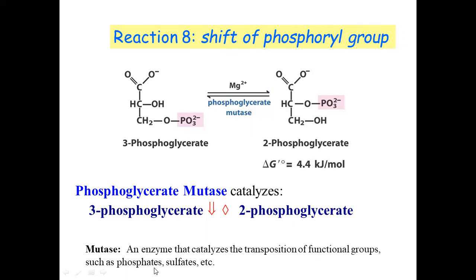Mutase is an enzyme that catalyzes the transportation of functional groups such as phosphate and sulfate from one position to another within the carbon chain. Here it is phosphate transport. Mutase enzyme and magnesium are both involved. This reaction gives us 2-phosphoglycerate from 3-phosphoglycerate.